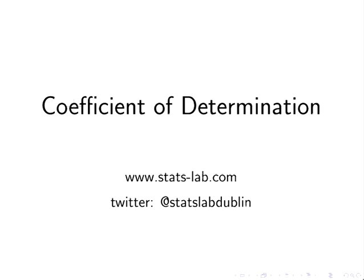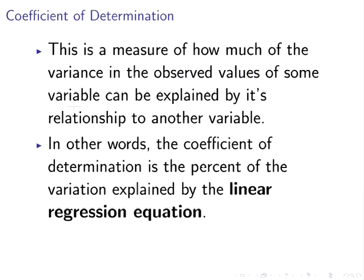In this presentation we're going to look at the coefficient of determination. The coefficient of determination is a measure of how much the variance in the observed value for some variable can be explained by its relationship to another variable.